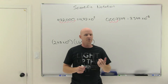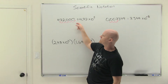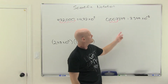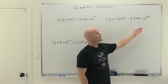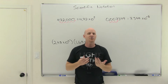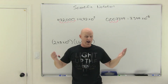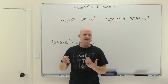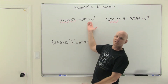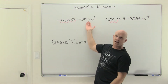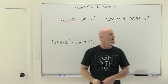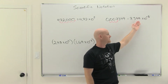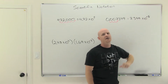Some people memorize this differently: if you're moving the decimal to the left, you get a positive power of 10; if you're moving it to the right, you get a negative power of 10. Either way you memorize it, you definitely have to memorize it. Personally, I prefer thinking of it in terms of absolute value — bigger than 1 gives a positive power of 10, and smaller than 1 gives a negative power of 10.